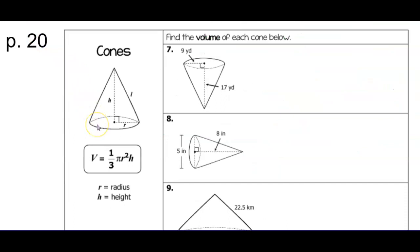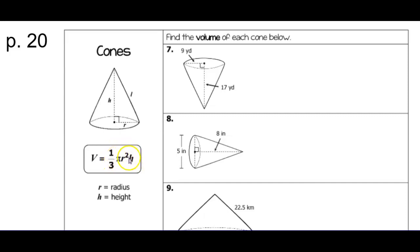Page 20 is about cones. Cones come to a point just like pyramids, and they relate to cylinders. The cylinder formula is pi r squared times h — circle area times height. For a cone, it's only one-third of that, so we put one-third in front, just like we did moving from prisms to pyramids.